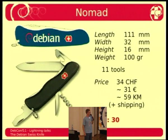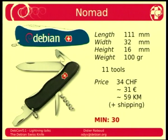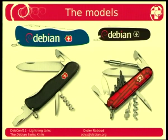The other model is slightly bigger but this one is usually only to break your computer, cut down cheese or sausages, or open wine bottles. It has a few less tools — 11 tools — but it's bigger. It weighs 100 grams. The price is 34 francs, about 59 euros, with a minimum order of 30 pieces. The colors are only blue or black — the red one is only available without Debian branding. You can have the big one in black or blue, or the small one in black or blue.